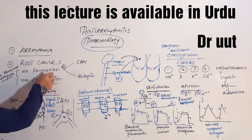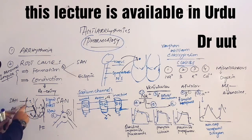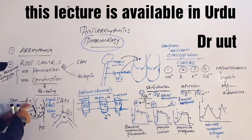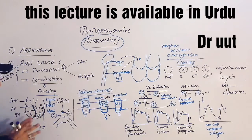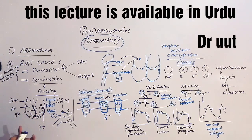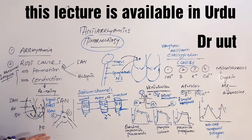In terms of formation: the sinoatrial node is responsible for forming the impulse. When the sinoatrial node overshoots repeatedly, instead of sending one or two signals to the ventricles to contract, it sends four or five signals. As a result, the ventricles undergo contraction four or five times instead of two, bringing the heart into a state of arrhythmia.